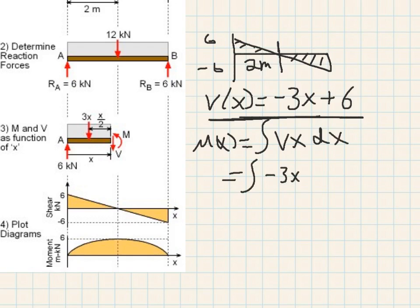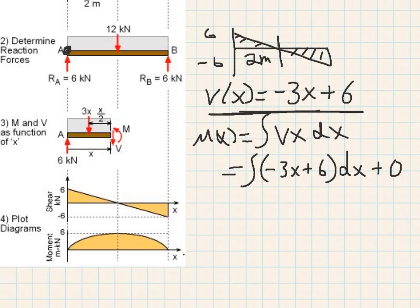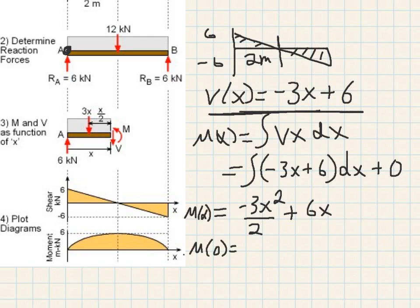So now you solve for that. You have negative 3x plus 6 DX. And you need to know if there is any moment starting from 0. And in this case, we don't have any moment. So this is plus 0. Now you solve for that interval. And you have negative 3x square over 2 plus 6x. And from there you can solve. So we'll say M equals 0 or X equals 0. We have negative 3x square over 2 plus 6x over 0. This gives us 0.